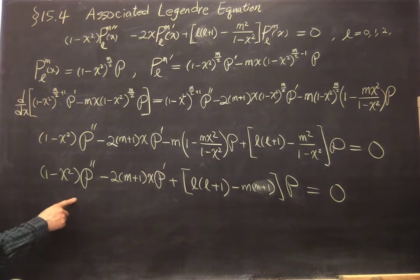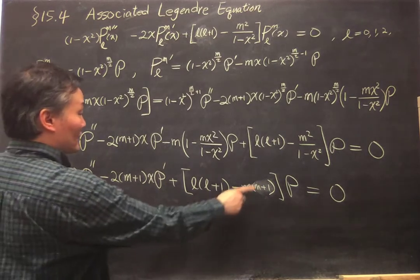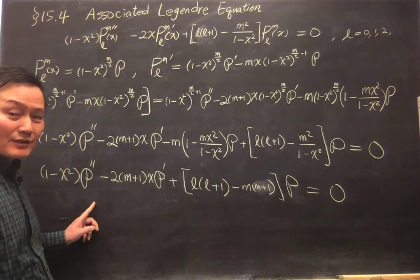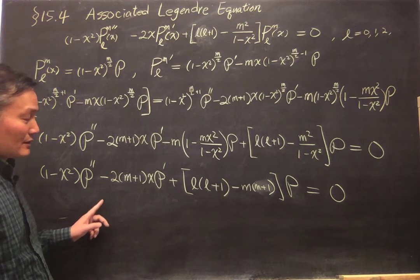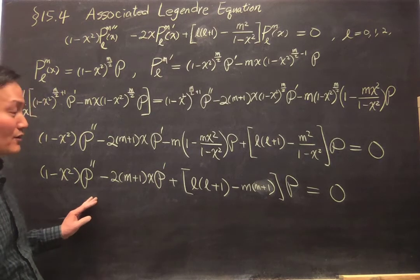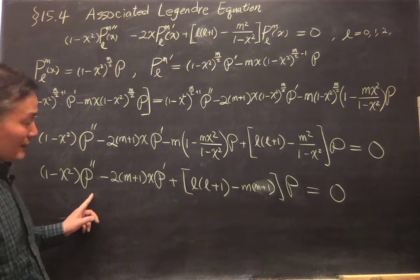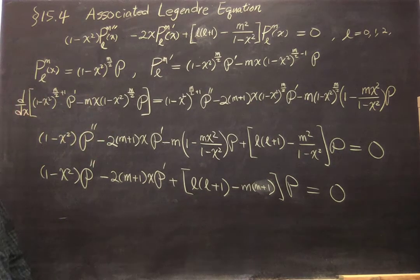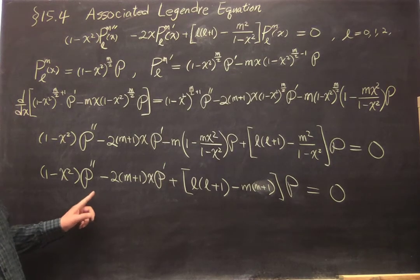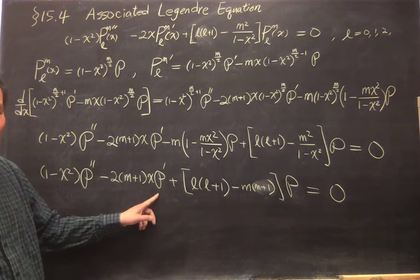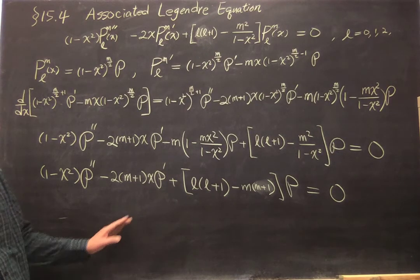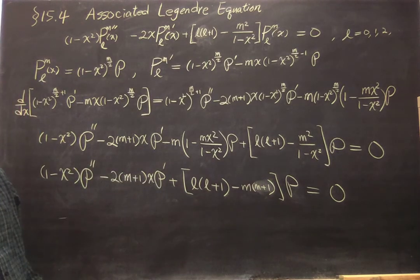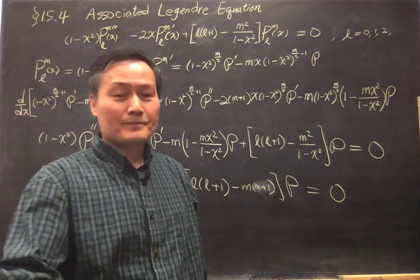This is the equation for script P. Now there is no 1 minus x squared in the denominator, so supposedly this will have a nicer solution. There will be a condition for that. To see the condition, we need to solve this equation using the power series method, and we'll see that the solution script P will truncate into a polynomial if a certain condition is satisfied and M is actually an integer. That will be next time.